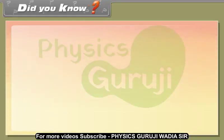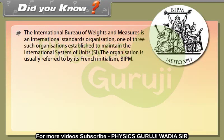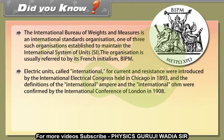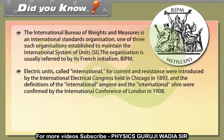Did you know: The International Bureau of Weights and Measures is an international standards organization, one of three such organizations established to maintain the International System of Units SI. The organization is usually referred to by its French initialism BIPM. Electric units called international for current and resistance were introduced by the International Electrical Congress held in Chicago in 1893, and the definitions of the international ampere and international ohm were confirmed by the International Conference of London in 1908.